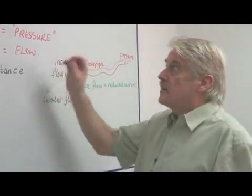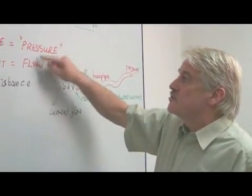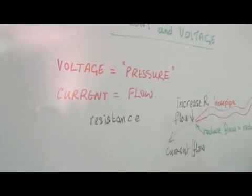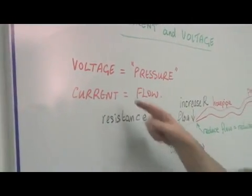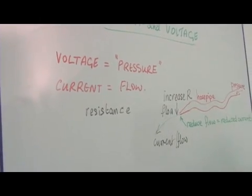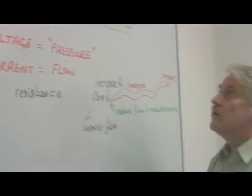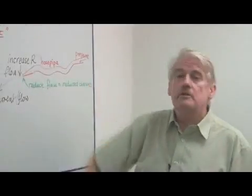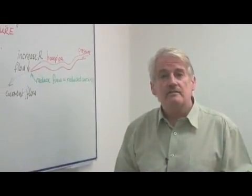So this is why there is a difference between these two terms. Voltage is about how hard you're pushing. Current is about how much actually goes through. So that is the basic difference between current and voltage in electrical circuits.